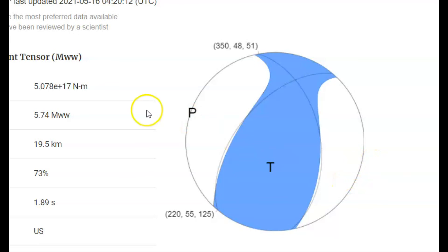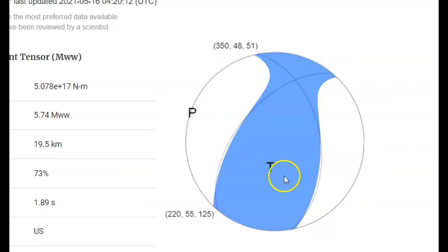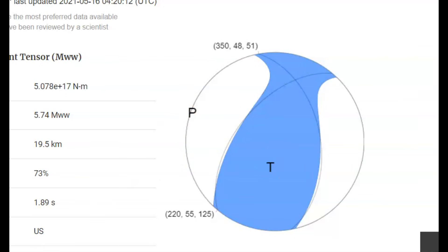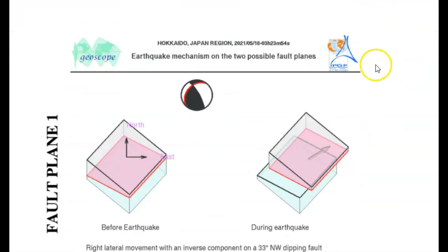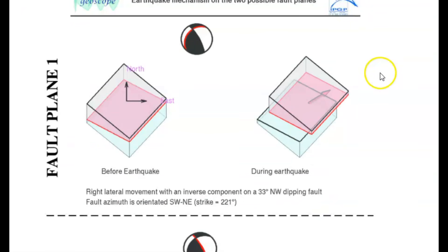Here we have the focal mechanism ball larger so you could see it. White is compression and the blue area is tension. The first wave here you can see came from the west. On Geoscope they had it listed as a magnitude 6.0.